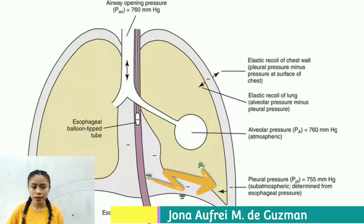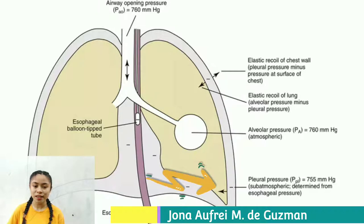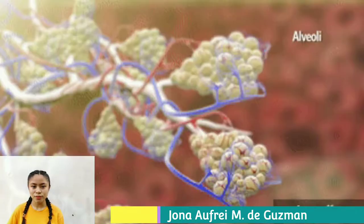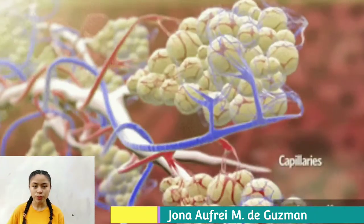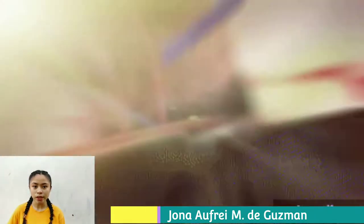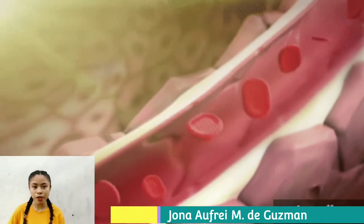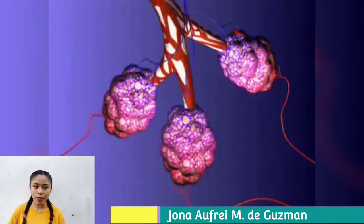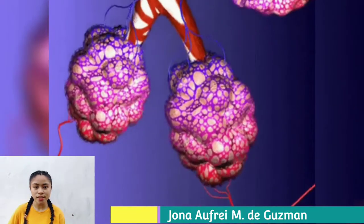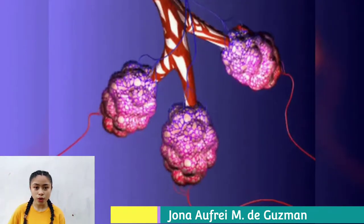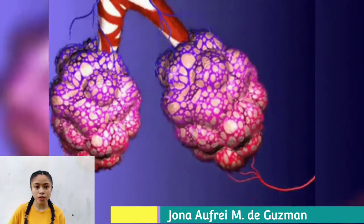Pleural pressure refers to the force acting to inflate the lung within the thorax, generated by the opposing elastic recoils of the lung and chest wall and the forces generated by the respiratory muscles. Air moves into and out of the lungs due to changes in alveolar pressure. Alveolar pressure changes are due to changes in alveolar volume, which in turn result from changes in pleural pressure.